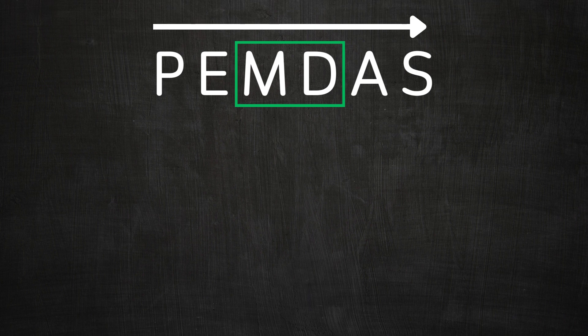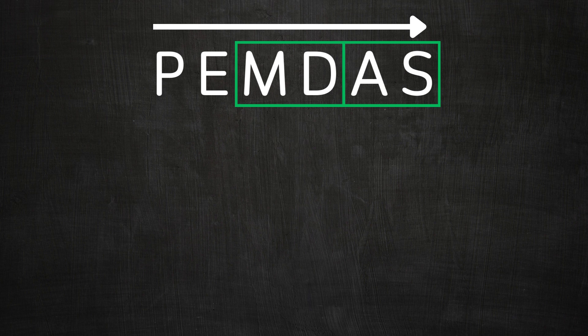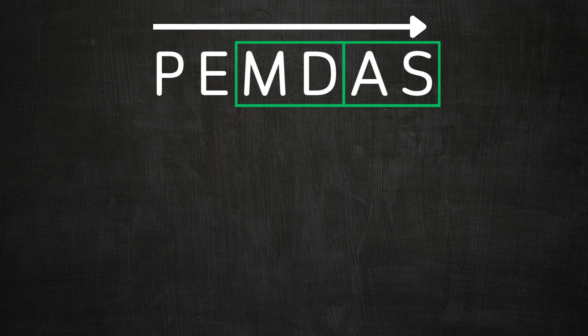Here you should consider multiplication and division as a group. When you are going from left to right, you should do whichever comes first. If division comes first and then multiplication, you should do the division first. This is the same for addition and subtraction as well.